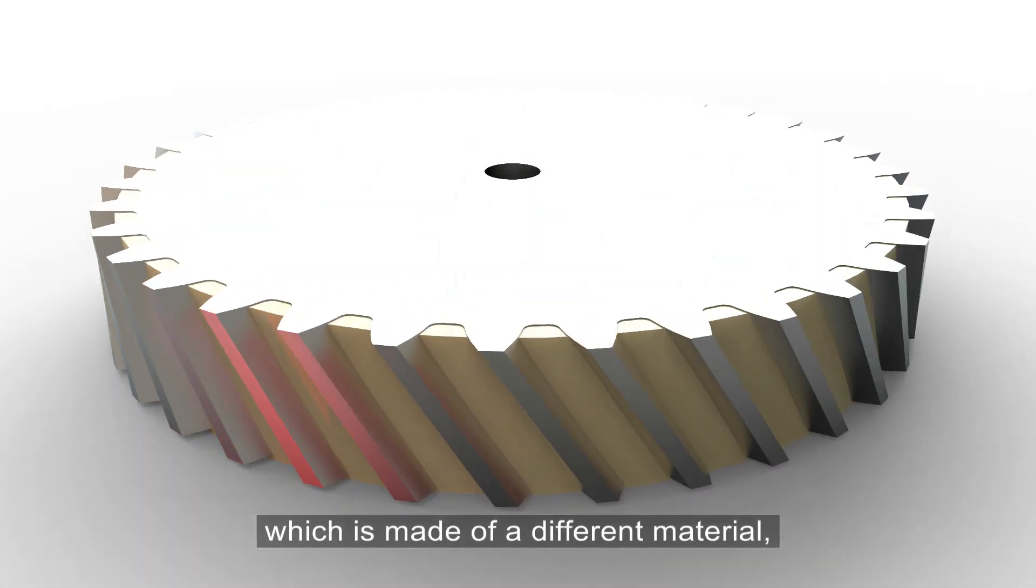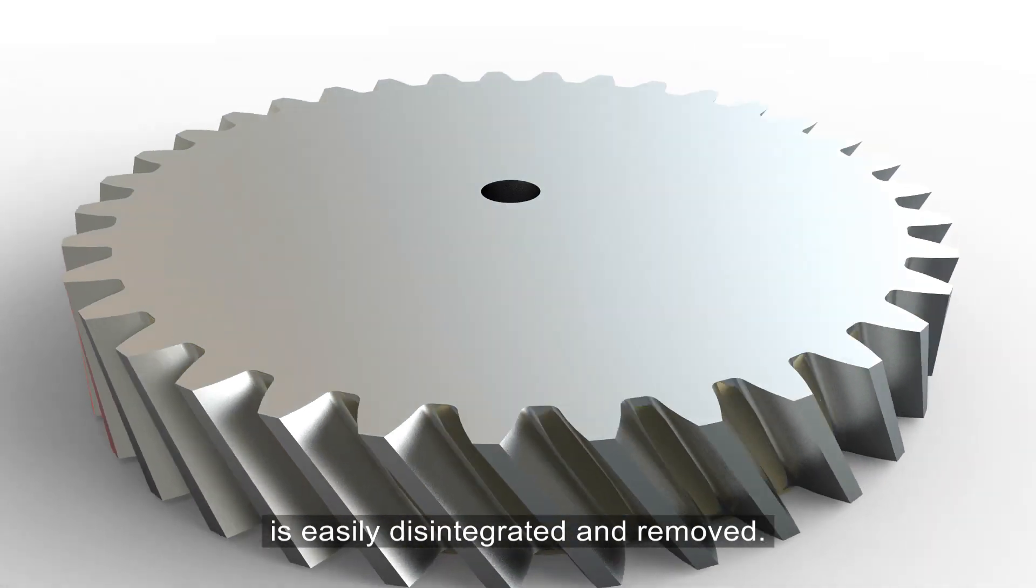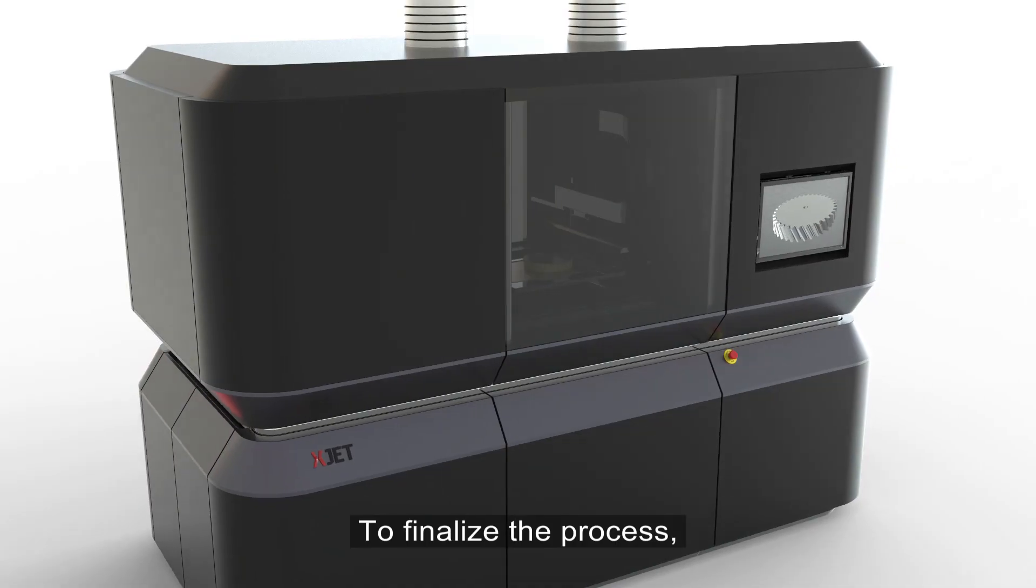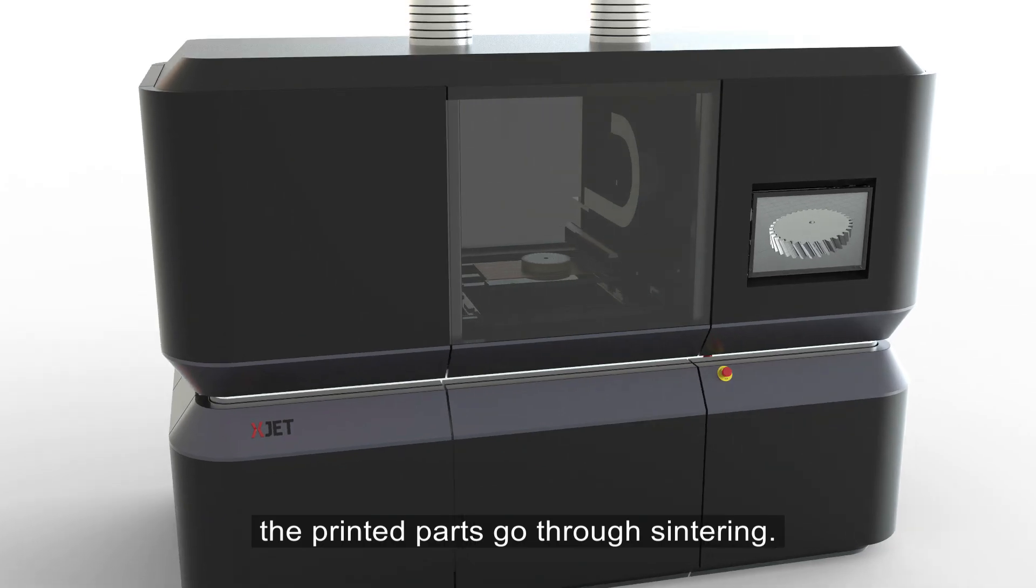After printing, the support component, which is made of a different material, is easily disintegrated and removed. To finalize the process, the printed parts go through sintering.